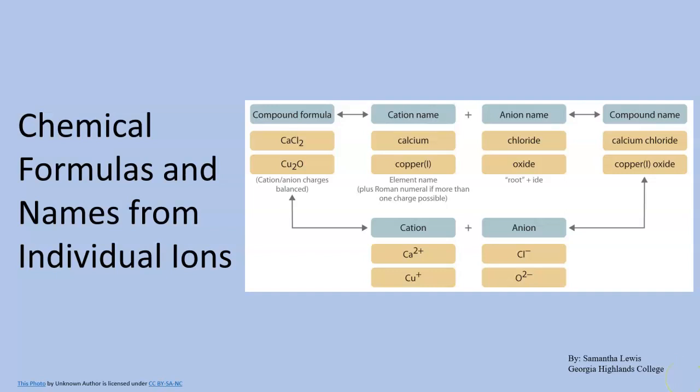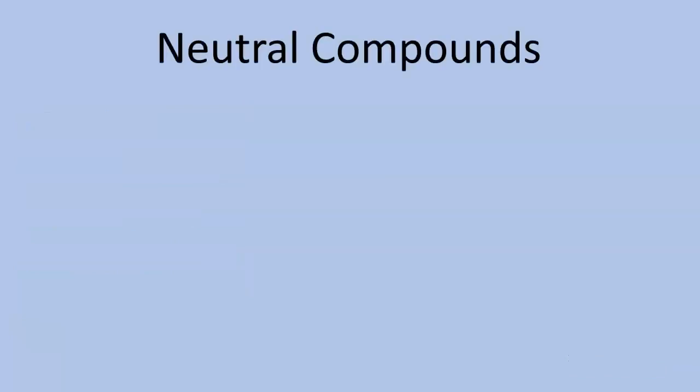In this video we're going to talk about chemical formulas and names from individual ions. First things first, let's talk about neutral compounds. How do we make a compound neutral? You have a sodium and a chloride ion. Your sodium has a positive charge and your chloride has a negative charge. Because they are positive and negative, we understand that there is one in front of that positive and negative.